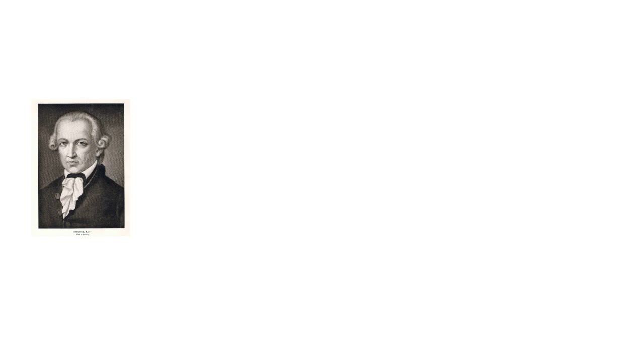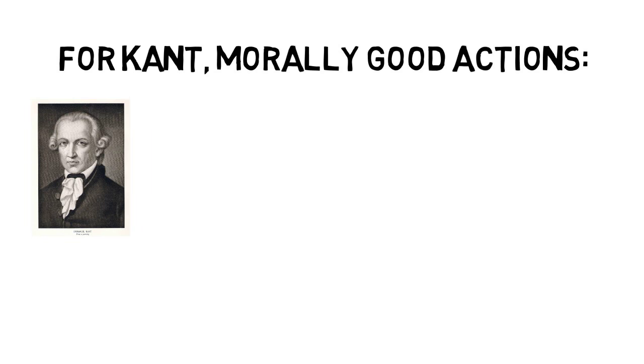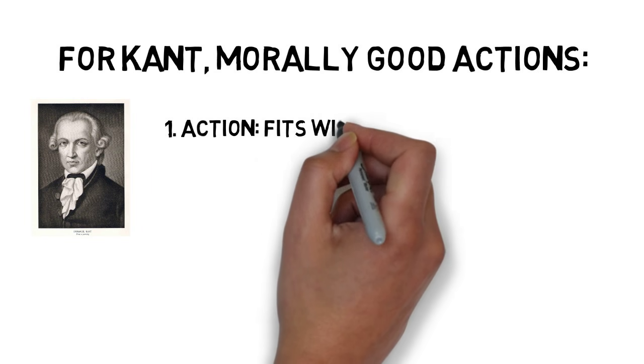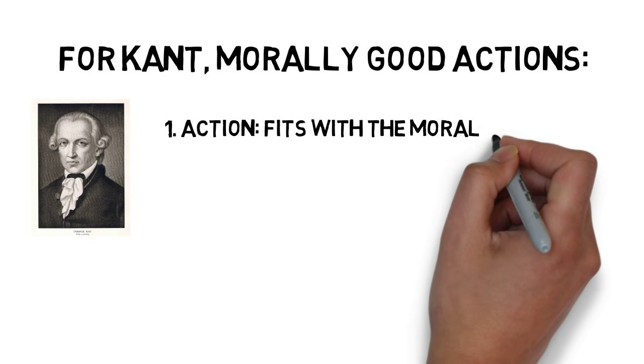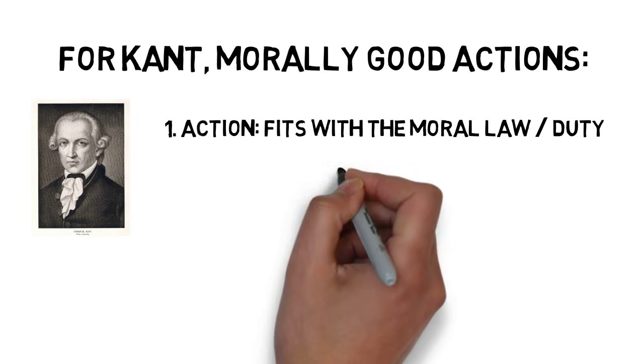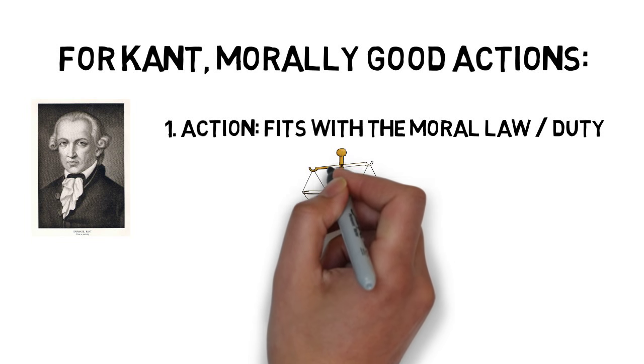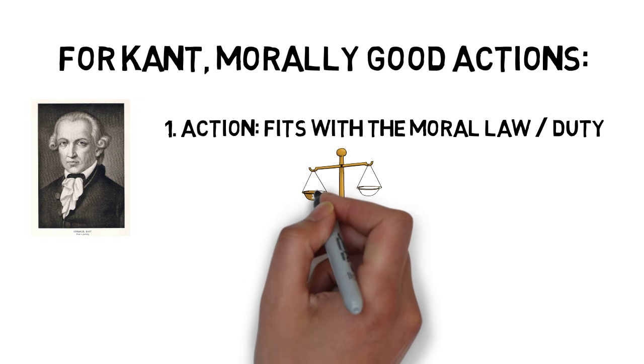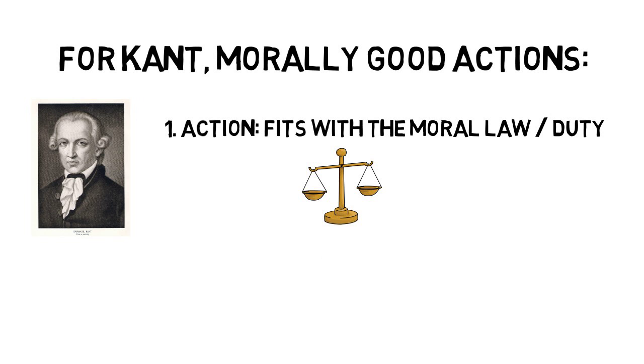So in conclusion, if we want to know whether Kant would think a certain action is a morally good action, there are two important distinctions we need to keep in mind. First, we must consider the action itself and determine whether or not it fits with the duty all of us have to follow the moral law. We can use the two tests we learned about regarding the universalizability of maxims and treating humanity as an end to know whether a given act lines up with the moral law and duty.